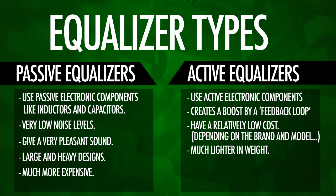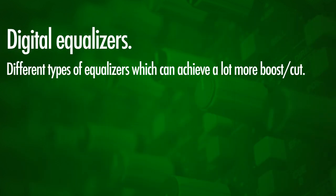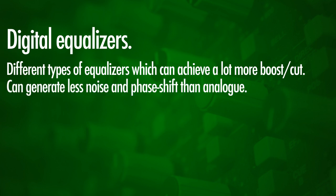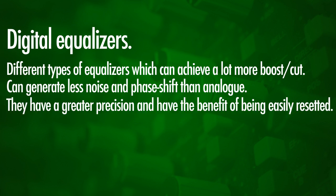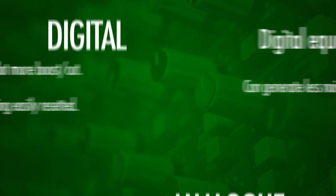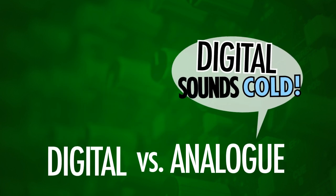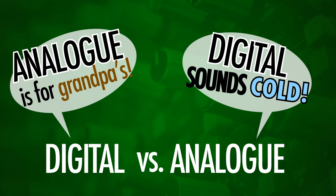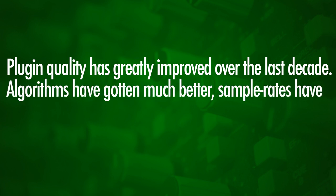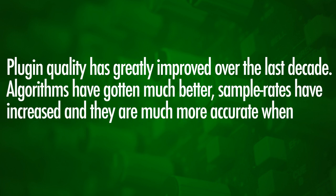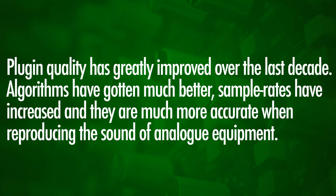The disadvantage is that the active components can generate some noise, but this is mostly on an acceptable level. When we're working digital we have different types of EQs and they can achieve a lot more boost and cut than a traditional analog equalizer can. Digital equalizers can generate less noise and phase shift, they have greater precision than analog and they have the benefit of quickly being reset. On the other hand, the point of discussion is that digital equalizers sound a lot colder and they don't add that extra coloration to the signal that analog gear does. The last decade though, many manufacturers have greatly improved their algorithms and the quality of EQ plugins, including the addition of saturation and harmonics.